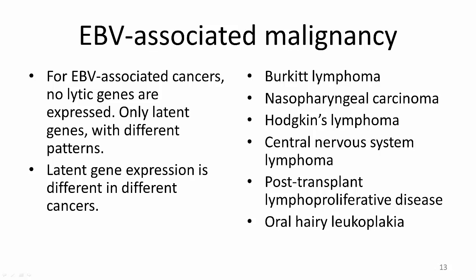These malignancies include Burkitt lymphoma, some types of nasopharyngeal carcinoma and Hodgkin's lymphoma, central nervous system lymphoma, post-transplant lymphoproliferative disease, and oral hairy leukoplakia. B cells in EBV-associated malignancies do not express lytic genes, but rather certain patterns of latent genes, and gene expression is actually different in different cancers.